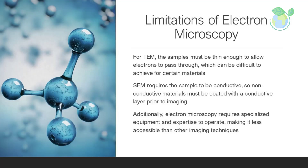While electron microscopy is a powerful imaging technique, it does have some limitations. One limitation is that the specimens must be prepared in a specific way in order to be imaged. For TEM, the samples must be thin enough to allow electrons to pass through, which can be difficult to achieve for certain materials. SEM requires the sample to be conductive, so non-conductive materials must be coated with a conductive layer prior to imaging. Additionally, electron microscopy requires specialized equipment and expertise to operate, making it less accessible than other imaging techniques.